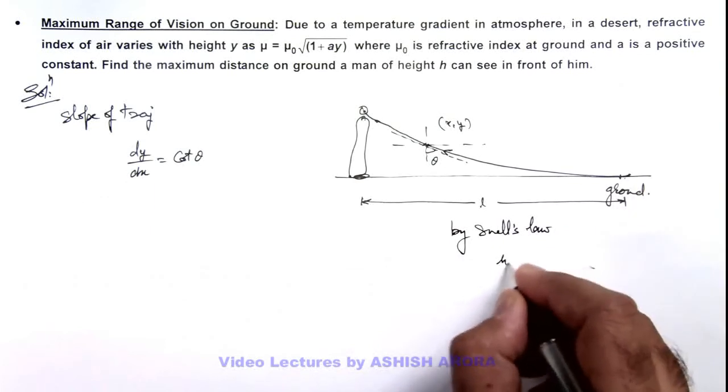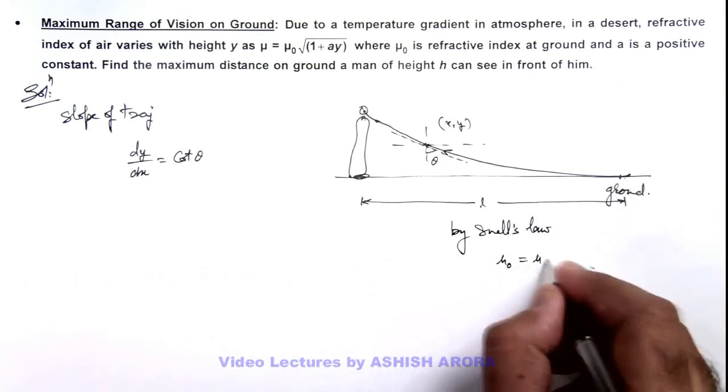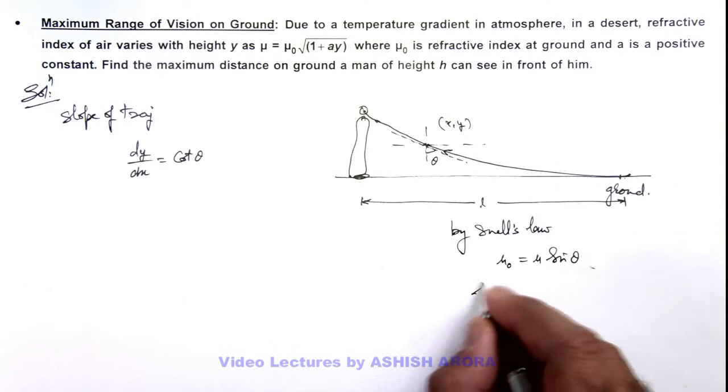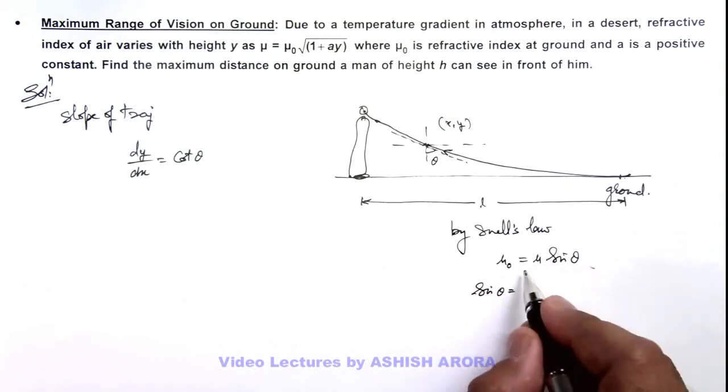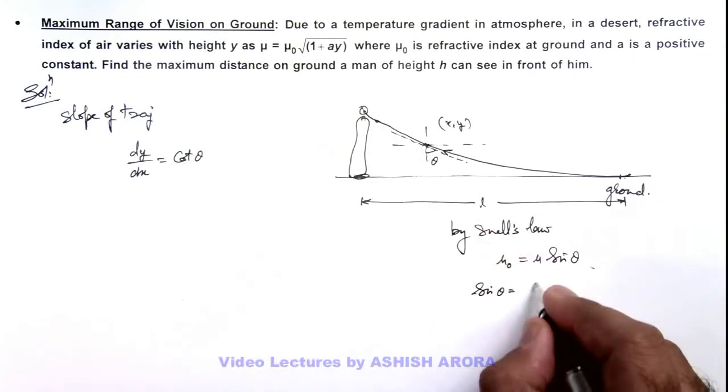This is μ₀ sin 90° = μ sin θ. So this will give us the value of sin θ which is μ₀/μ. μ is given by this, it is 1/√(1+ay).